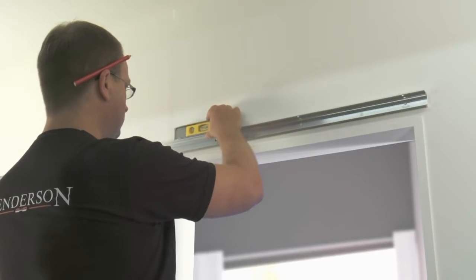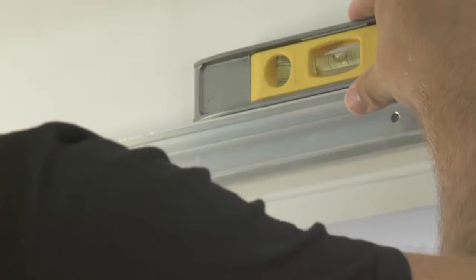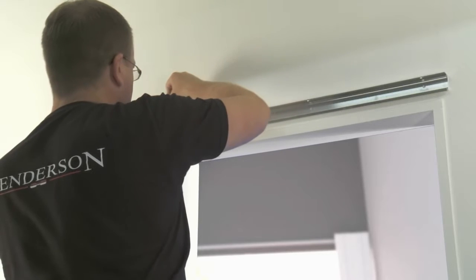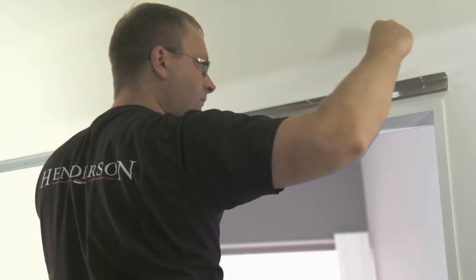Position the track against the height marking onto the wall and check it is level using a spirit level. Using a pencil, draw a line along the top of the full length of the track.